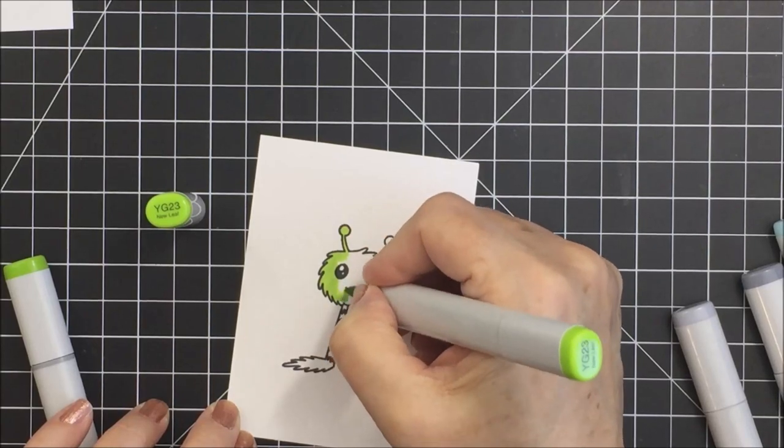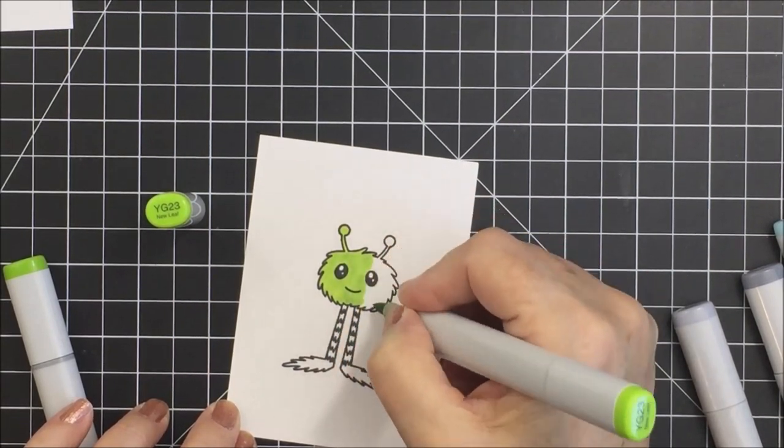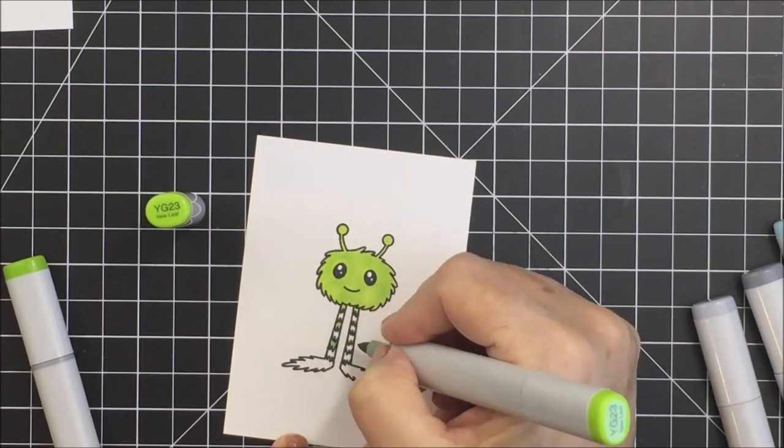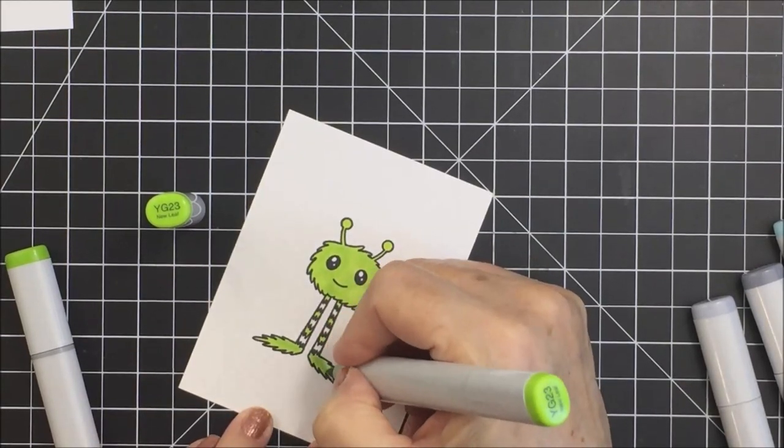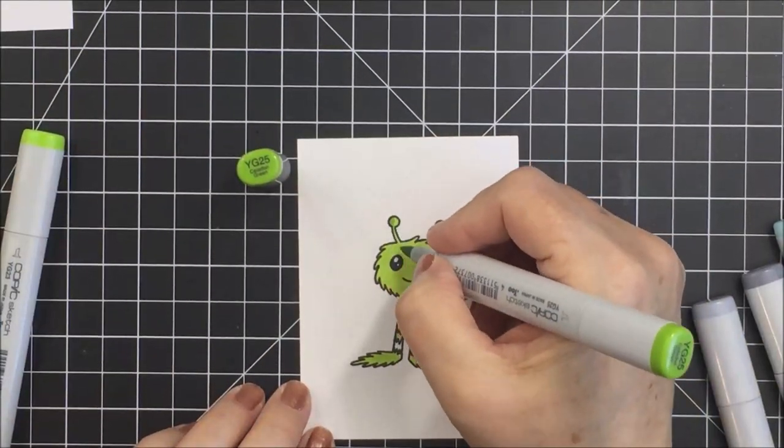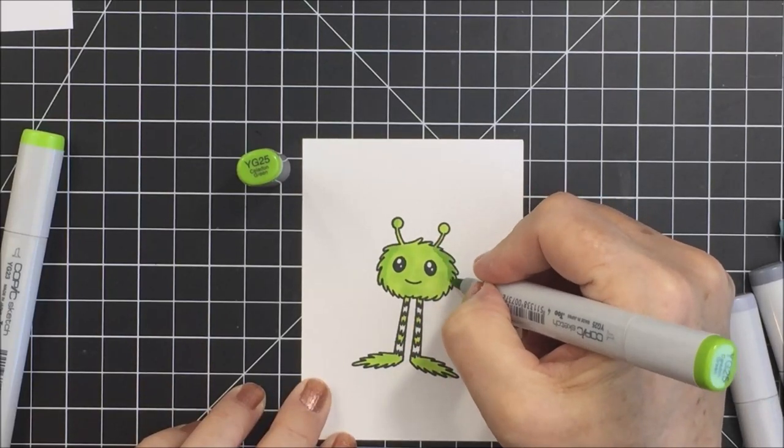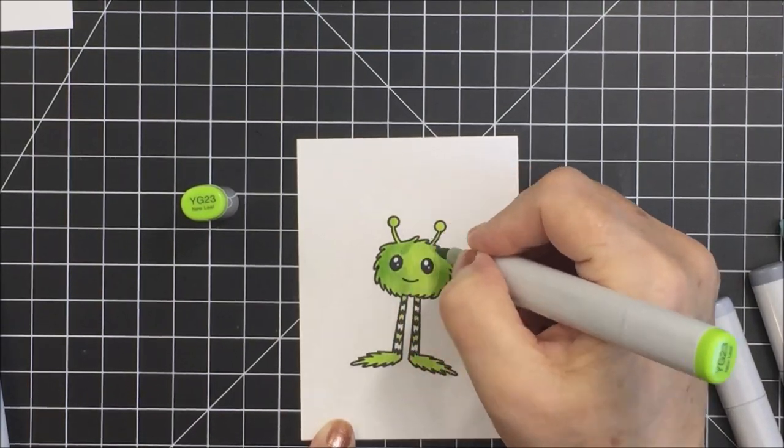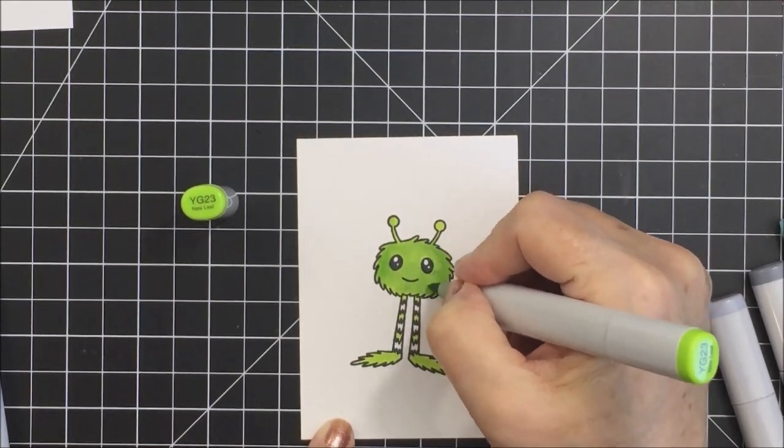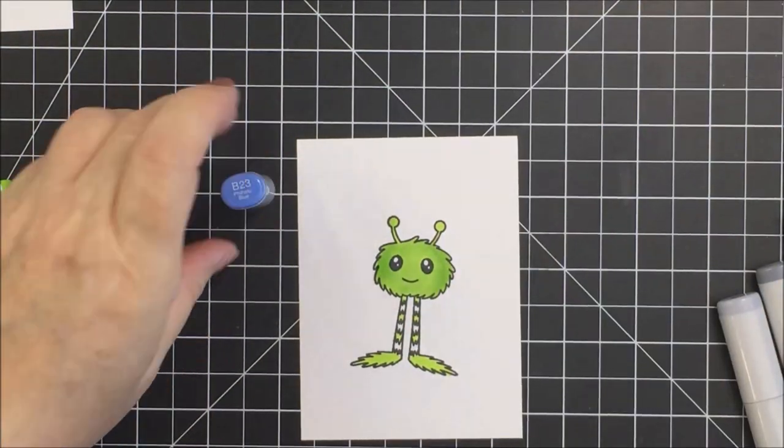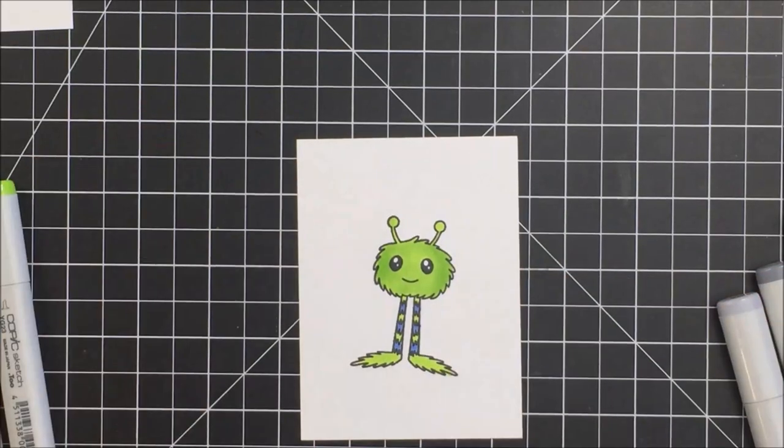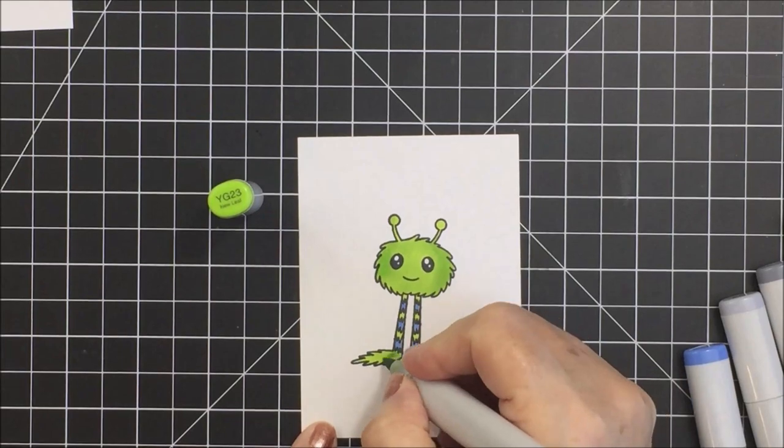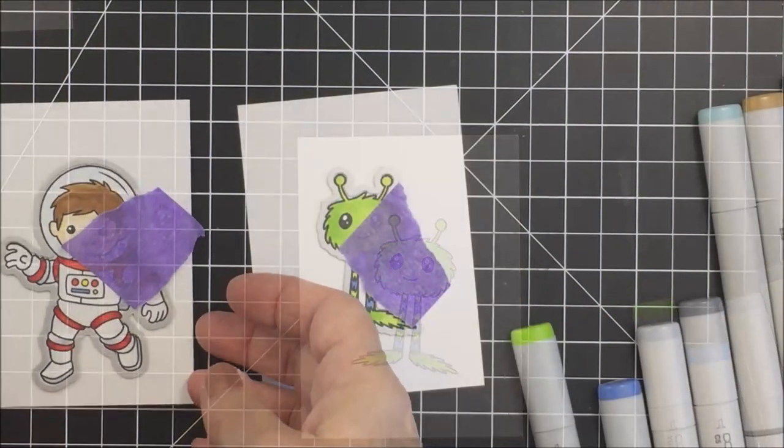Now I'm going to color my little alien here with a couple of YGs. I'm going to use YG23 and YG25. I think my YG25 actually leaks here at some point, but if that ever happens to you, one way that you can prevent that if you've got a really juicy marker is just take the lid off the opposite end and it will prevent it from leaking out in that way. So when that happened, I just went ahead in with my Y24 and blended that out and it was fine. Now I'm going to give this little guy some blue stripes on his legs just to make him look a little more interesting and fun.